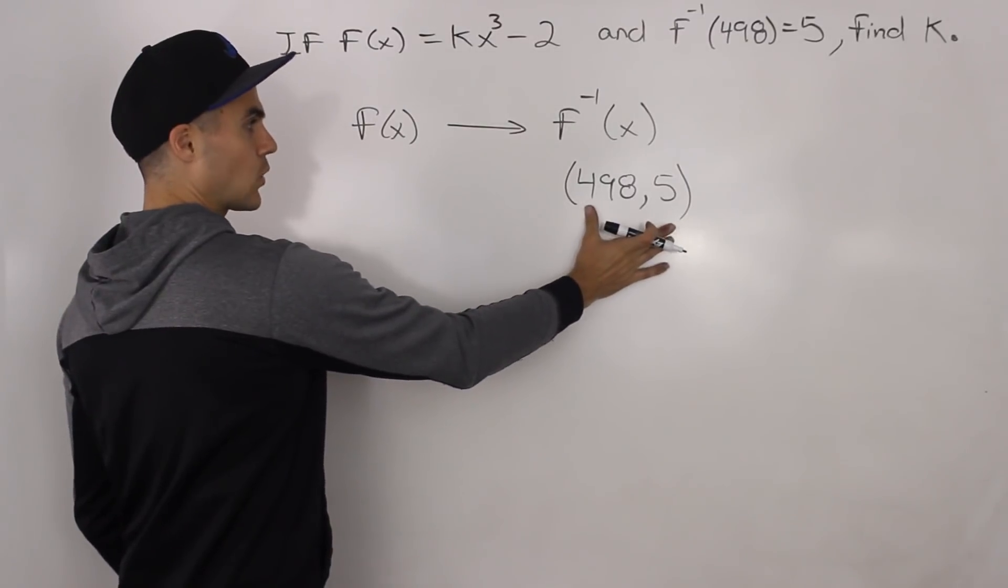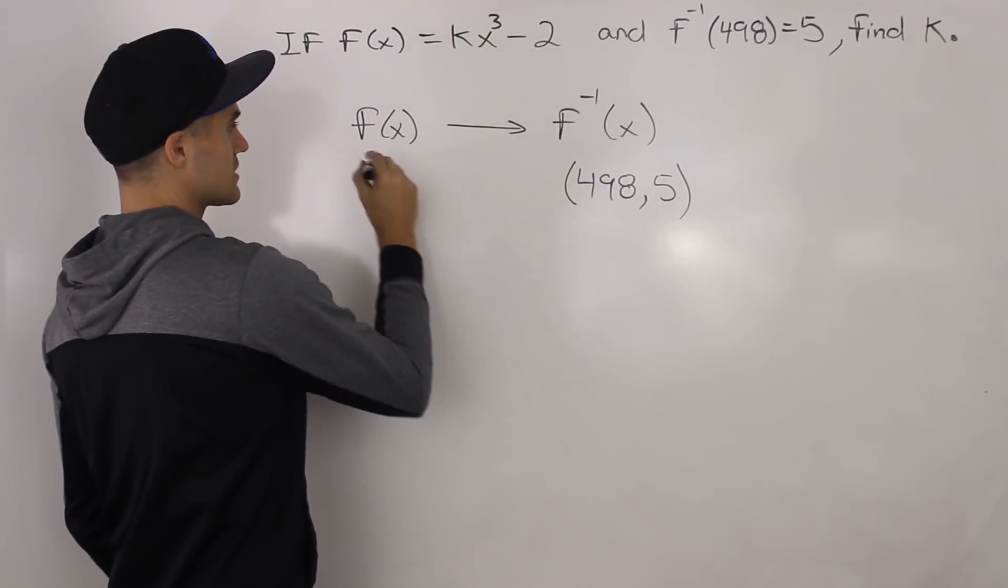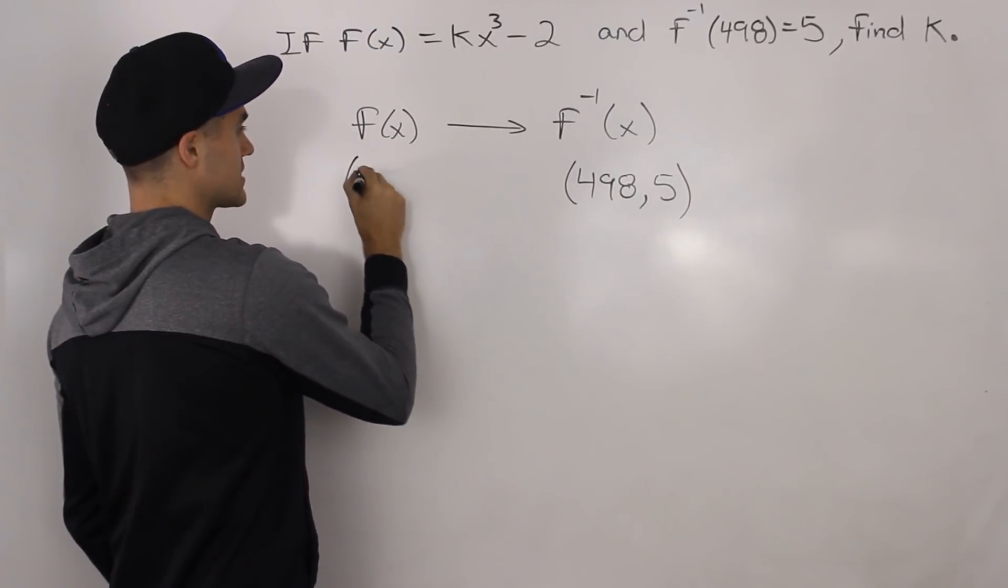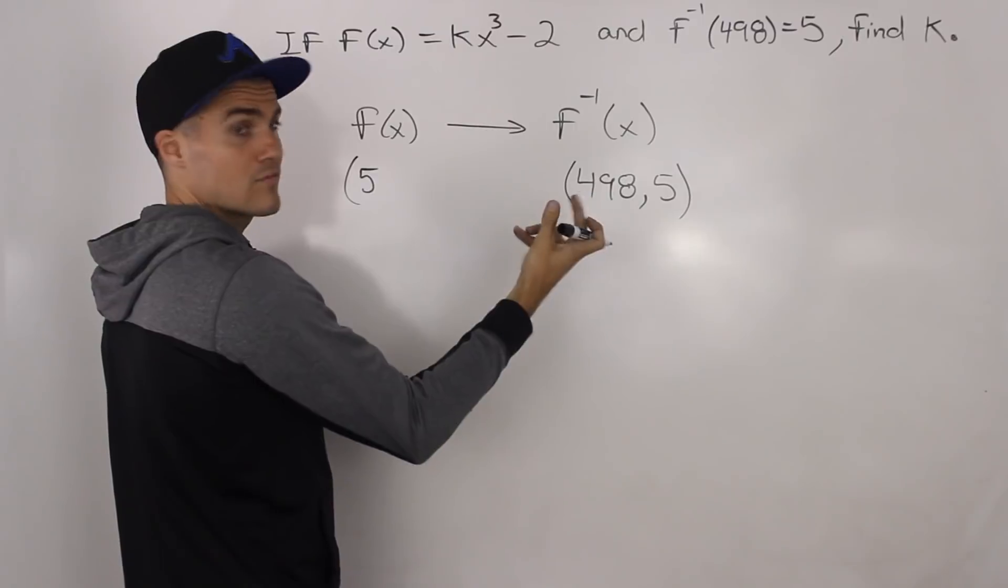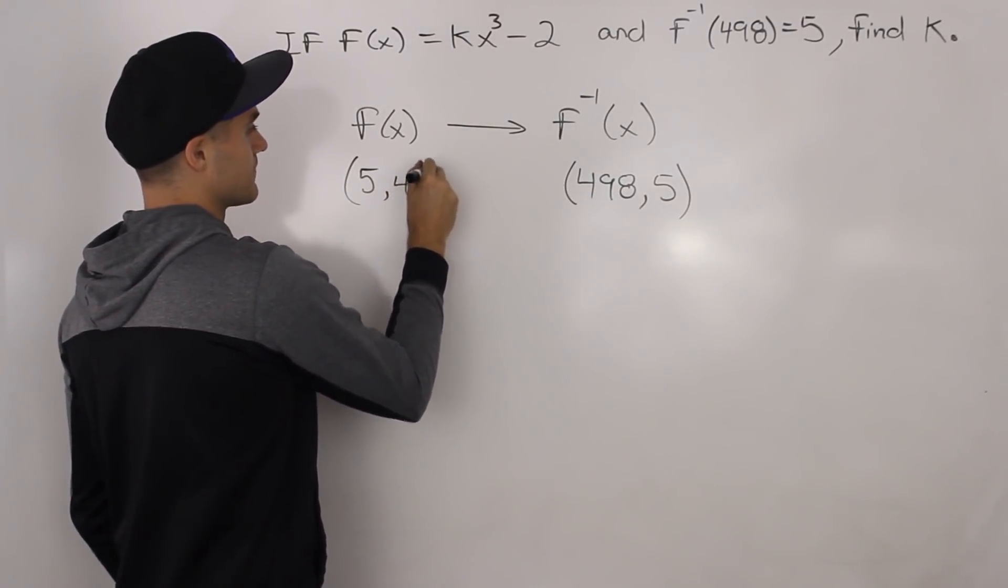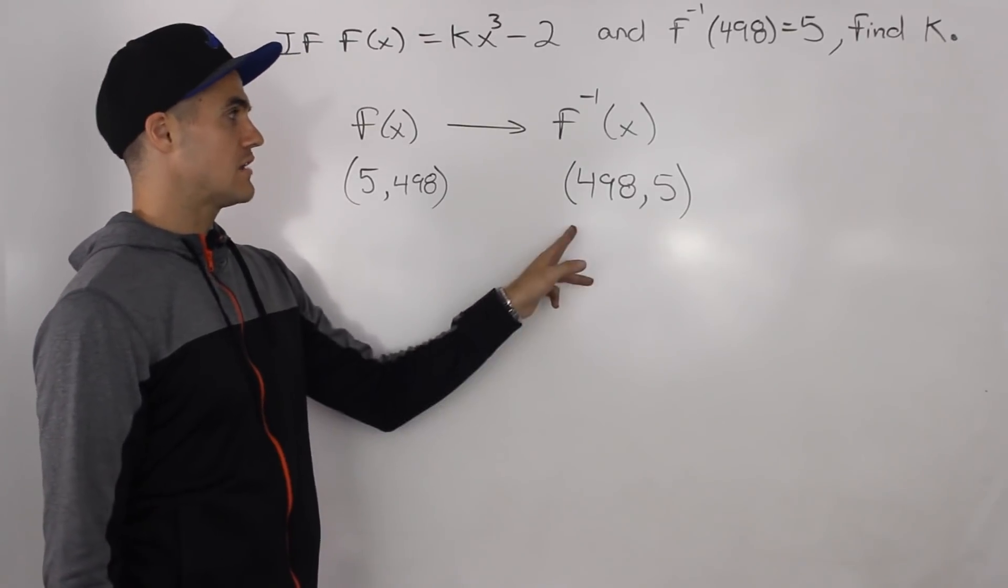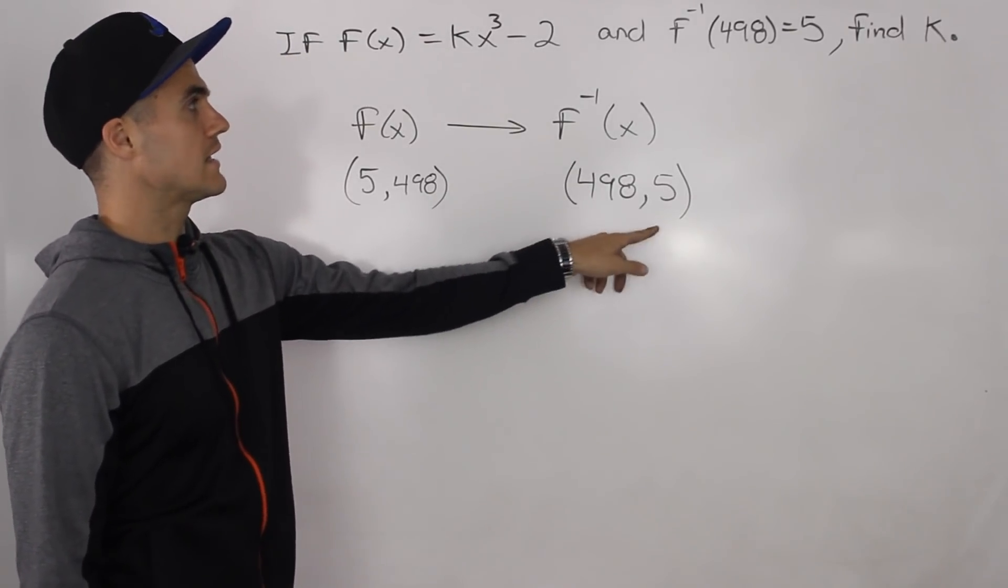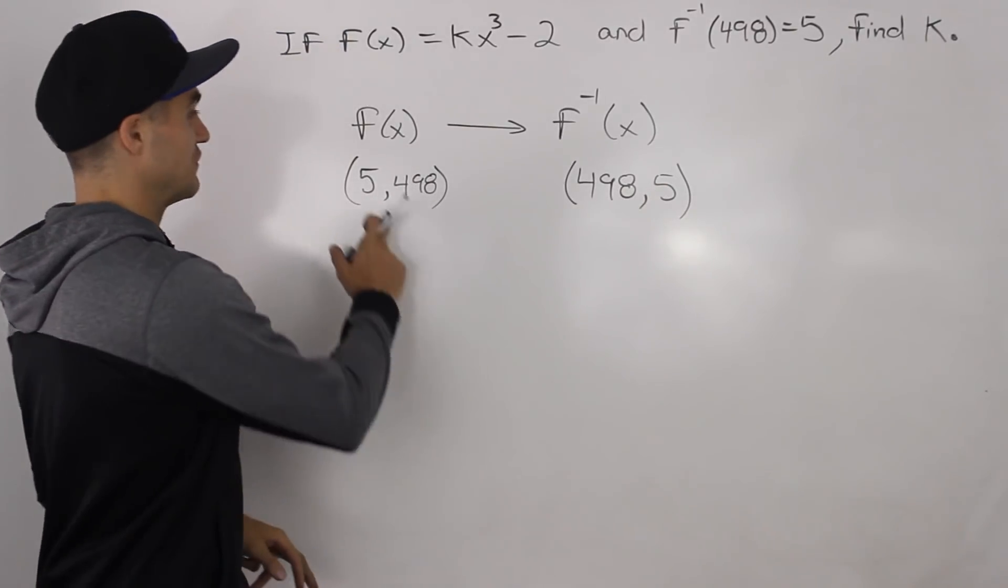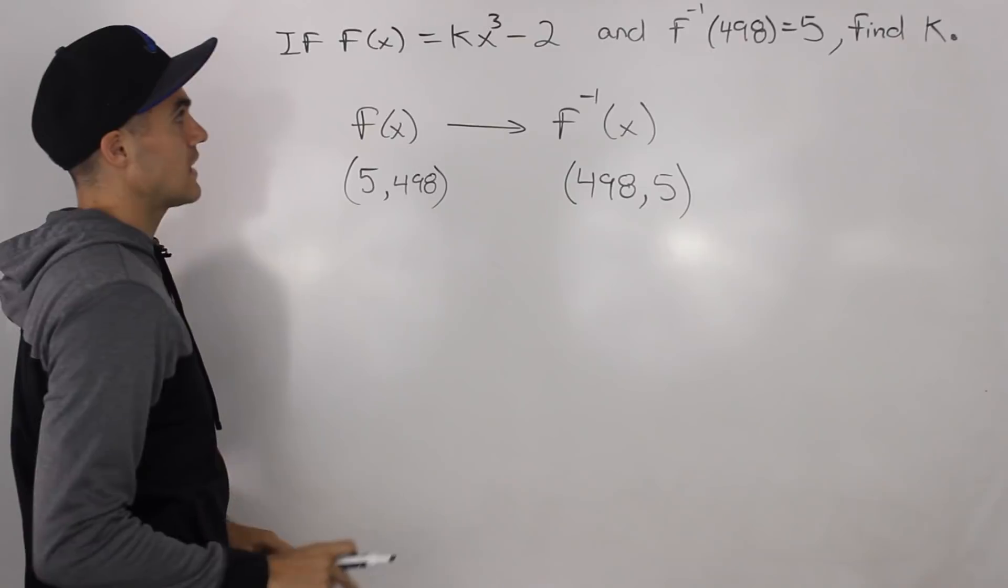Well, if this is the coordinate on the inverse, then we know on the function, the function is going to contain a coordinate where the x and y values are interchanged. So it's going to be (5, 498). So one more time, the inverse contains the coordinate (498, 5). That means the function contains the coordinate (5, 498).